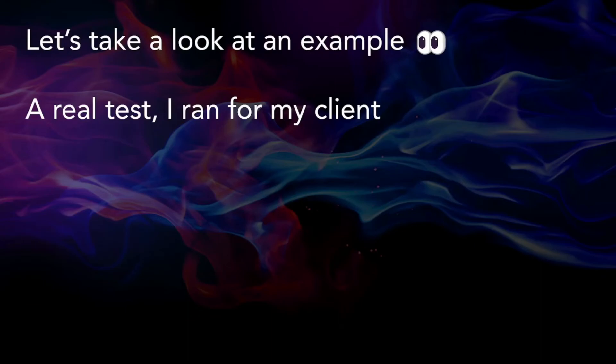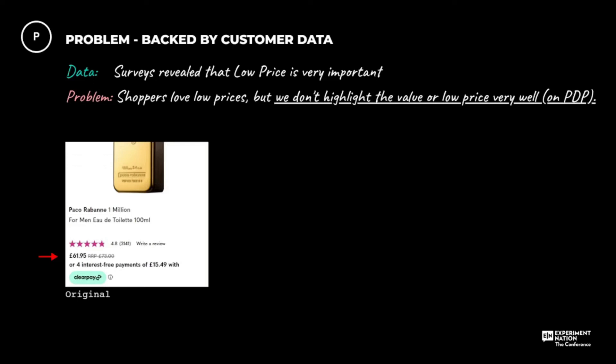Let's look at a real world example. Here's the problem. We ran surveys and learned that low price is very important — this client is selling perfume. We looked at the site for opportunities via heuristic analysis, and with this lens we noticed that on the product page, we're not actually highlighting the low price very well. We're not showing the discount or the amount saved. So this is now a key opportunity backed by data. The problem: shoppers love low prices, but we don't highlight it well.